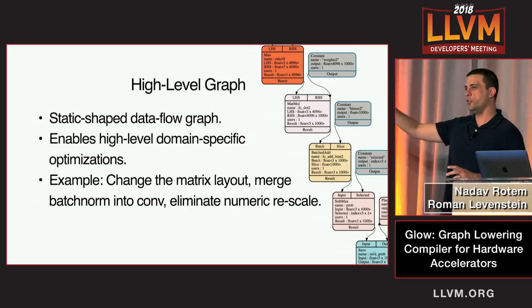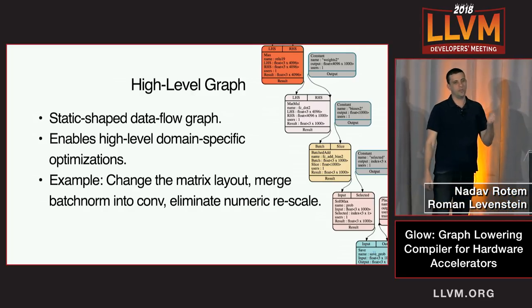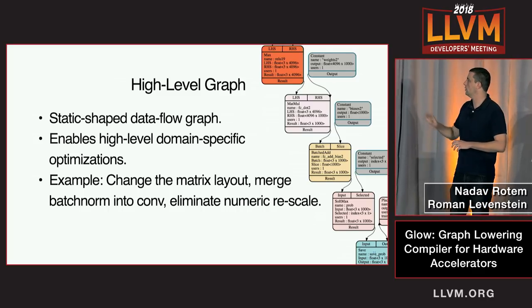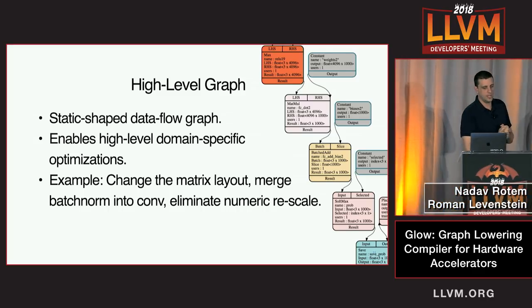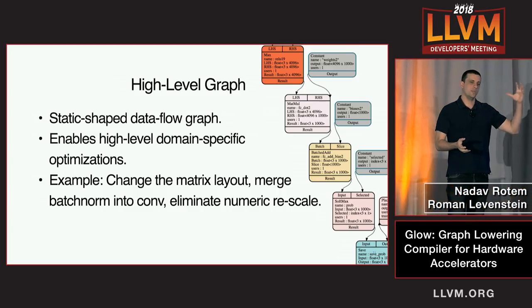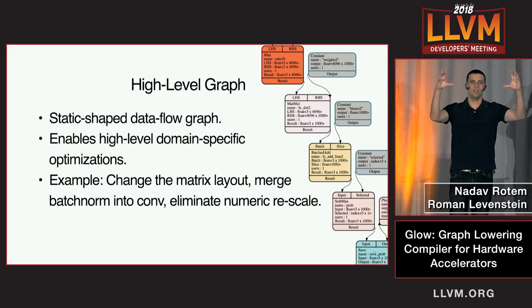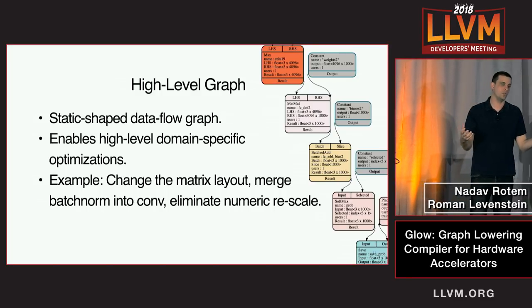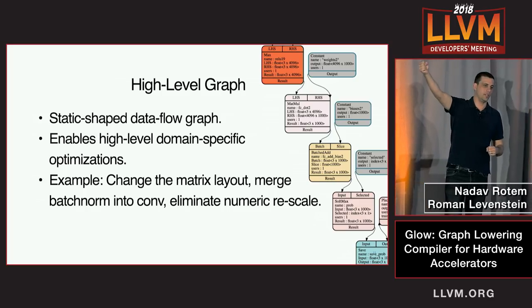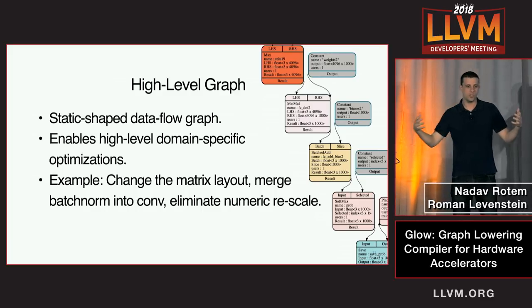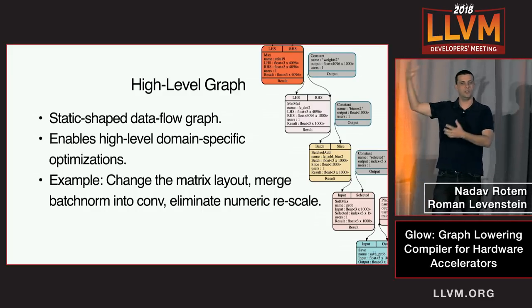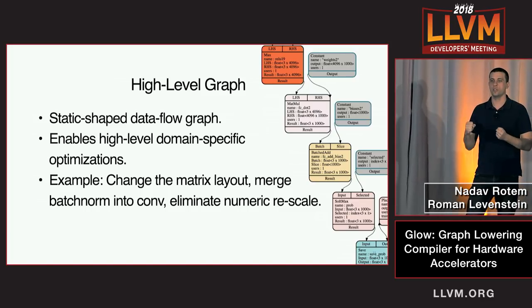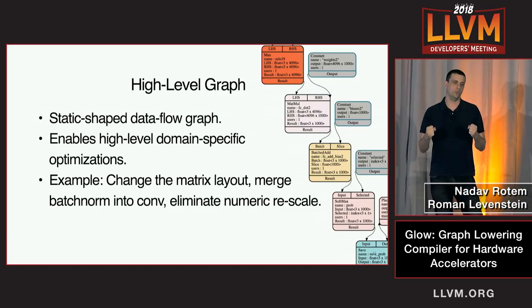Looking at the high-level IR: on the right you can see a picture of the graph. This is a node-based dataflow, statically-typed IR. It gives you the ability to perform high-level domain-specific optimizations. For example, if you have a matrix multiplication followed by a scaling operation — multiplying all elements by two — one optimization we have is to modify the weights of the matrix multiplication and eliminate the scaling operation. We also get rid of transpose operations and change matrix layouts to make hardware access more efficient.